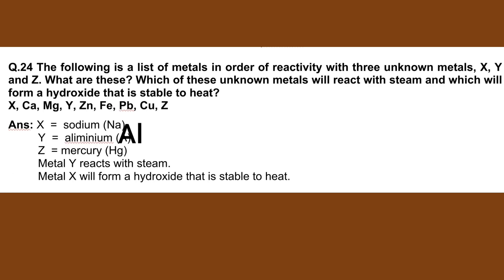Number 24. The following is a list of metals in order of reactivity, with three non-metals X, Y, and Z. Which of these non-metals will react with steam? The reactivity series listed includes: Na, Mg, Al, Zn, Fe, Pb, Cu — these are the elements listed in order of reactivity.